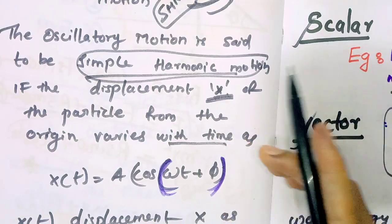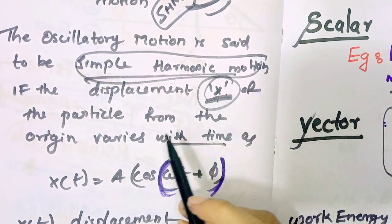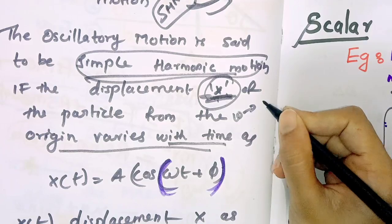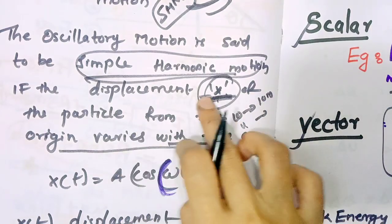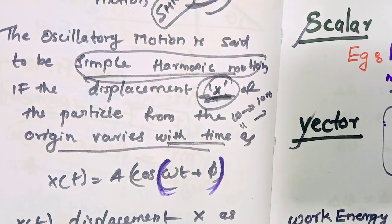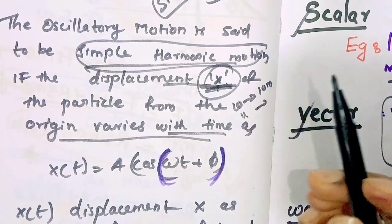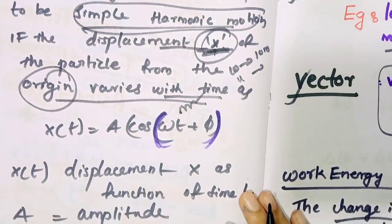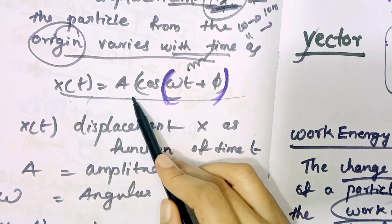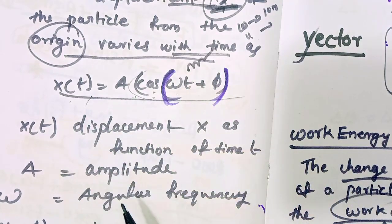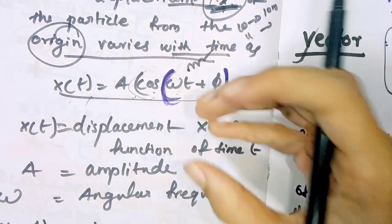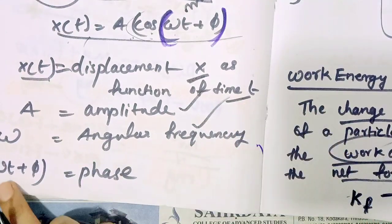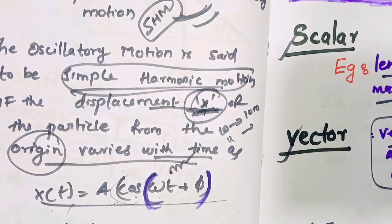If the displacement x of the particle from the origin varies with time, the displacement will change. We take out the expression for simple harmonic motion: x(t) = A cos(ωt + φ). Here x(t) is the displacement as a function of time, A is amplitude, ω is angular frequency, and ωt + φ is the phase. That is the simple harmonic motion definition.